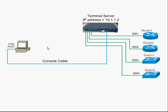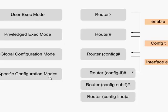I will first configure this terminal server through this PC using the console port and the COM port of the PC. Before I configure, just some basic router modes: when you enter the router you are in user executive mode and end up at the router prompt.